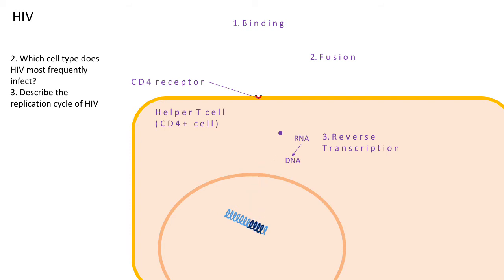From here, the DNA moves into the nucleus and integrates into the host cell's DNA — into its genome. That process is called integration. As a consequence, the host cell is used as a viral replication factory, and it starts to produce the components needed to make new viruses.